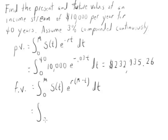So that's going to be the interval from 0 to 40. Our income stream is 10,000 e to the 0.03 times (40-t) dt.